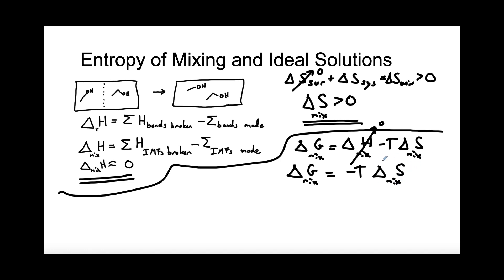And since we said delta S of mixing for ideal solutions is positive, we have a positive times a negative, and so delta G of mixing is going to be negative for ideal solutions.